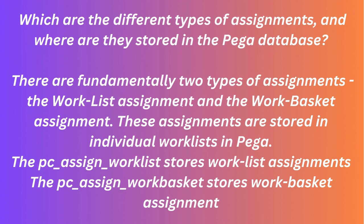Question: Which are the different types of assignments, and where are they stored in the PEGA database? Answer: There are fundamentally two types of assignments — the worklist assignment and the workbasket assignment. These assignments are stored in individual worklists in PEGA. The PC_Sign_Worklist stores worklist assignments, and the WPC_Sign_Workbasket stores workbasket assignments.